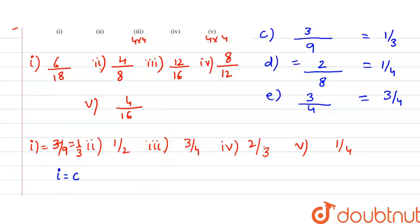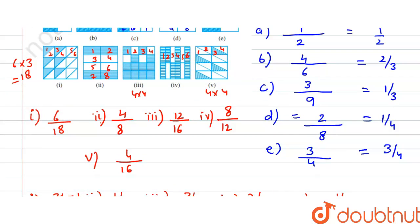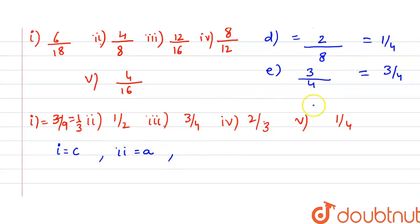The second figure gives 4/8 which simplifies to 1/2, so the second figure is equivalent to A. The third figure gives 12/16 which simplifies to 3/4, so the third figure is equivalent to E.